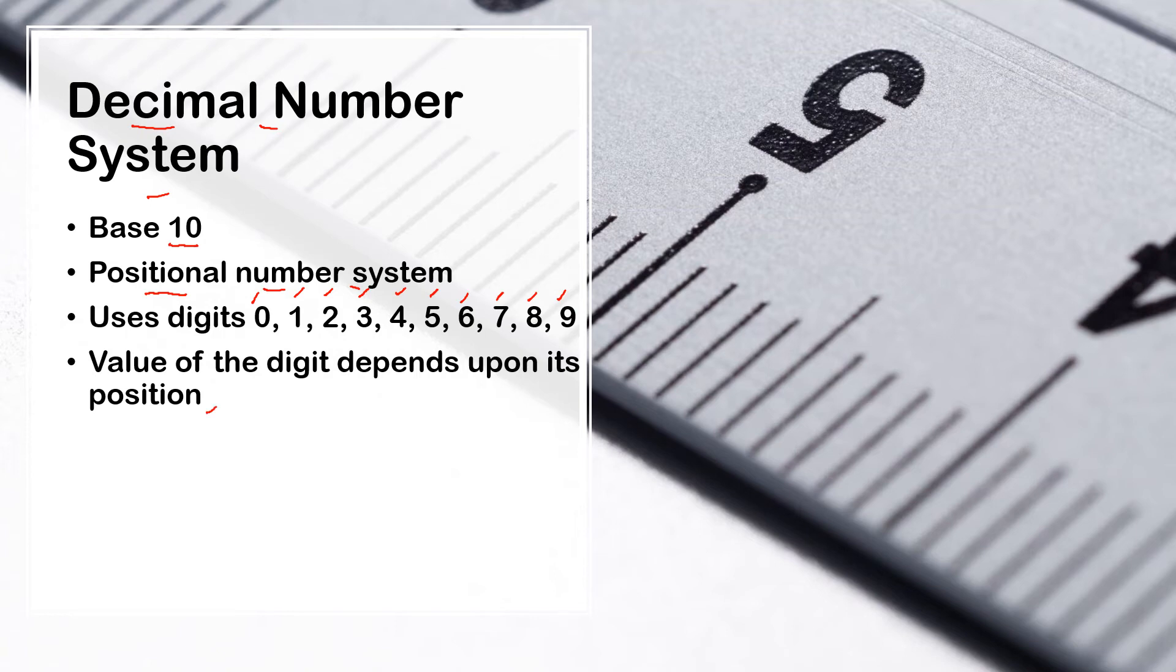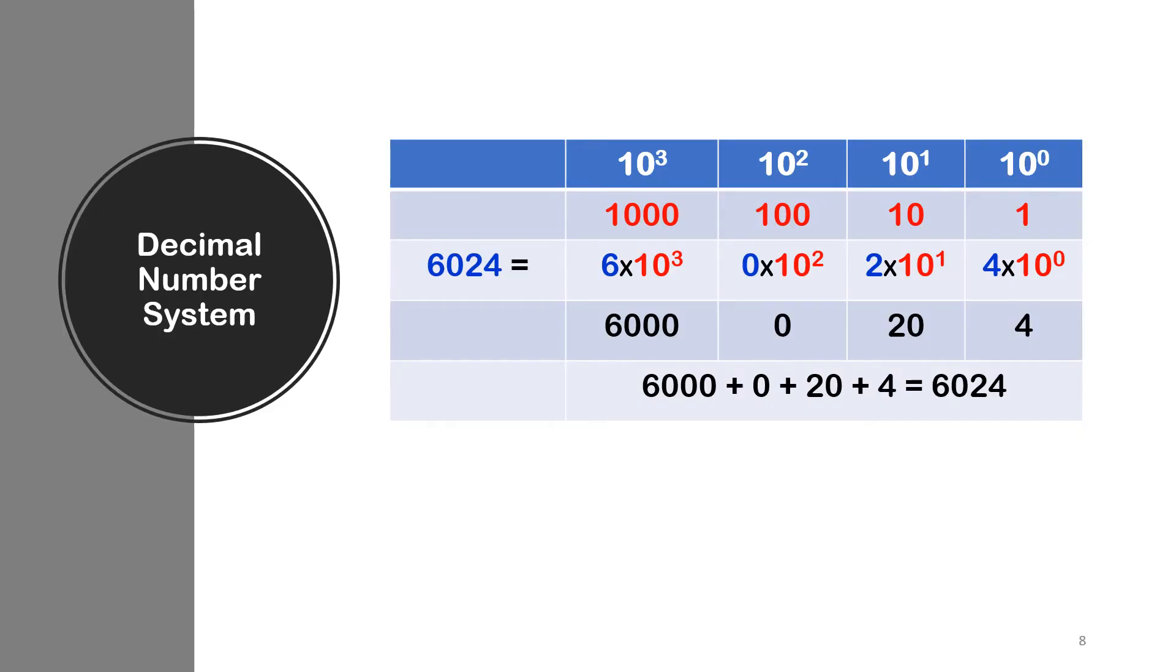And it's also a positional number system which means the value of the digit depends upon its position. Let's take a look at an example. Again we will start off with the position 0. So remember we are working with base 10 now. So it's 10 to the power of 0, it's a 1. In fact any number to the power of 0 is always a 1.